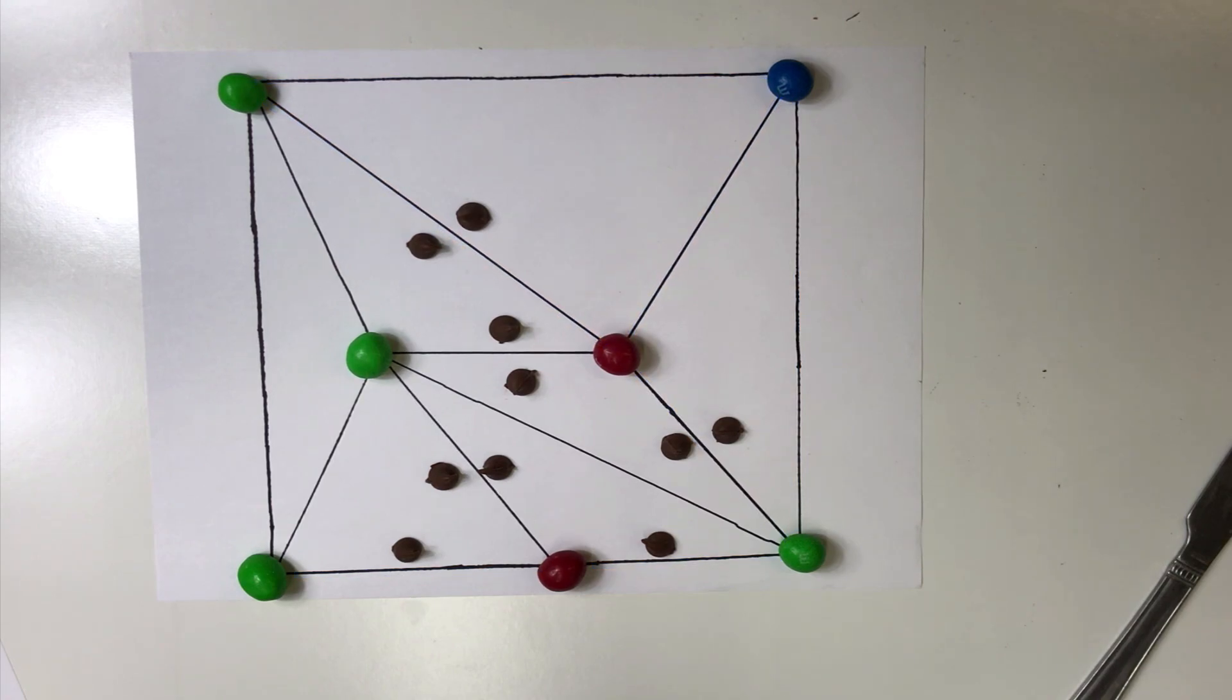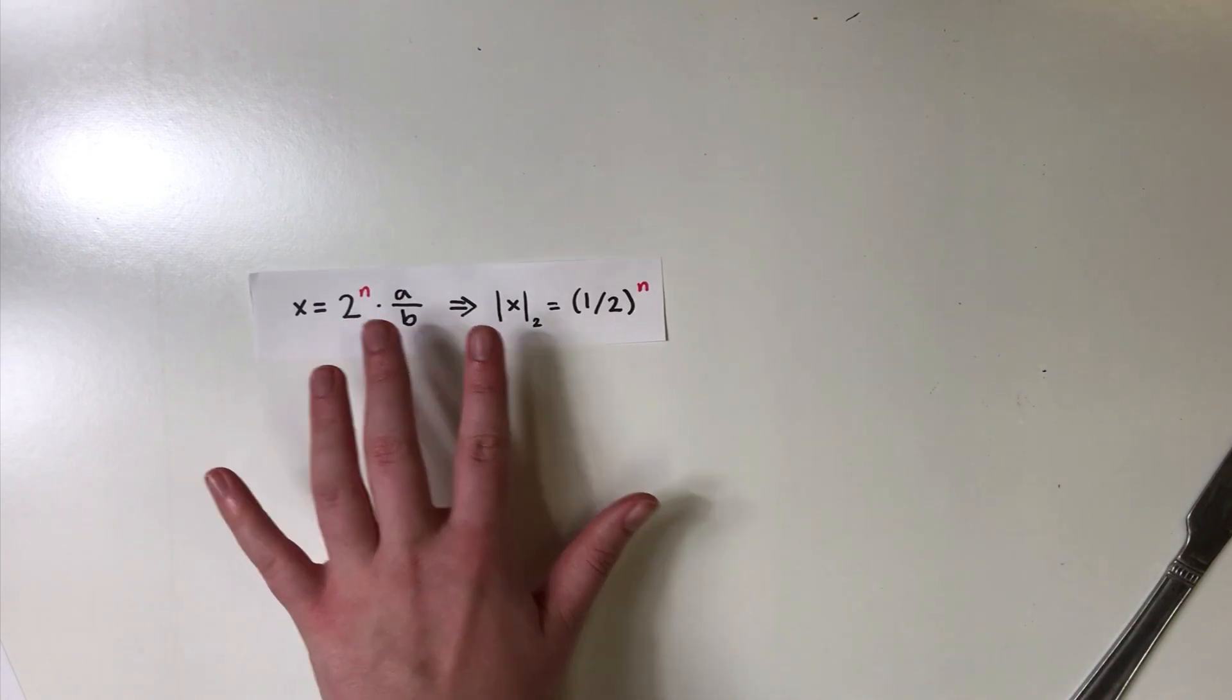Now, to describe the 2-adic valuation. A valuation is just a way of representing how big a number is, like absolute value. For 2-adic valuation, we determine how many powers of two are represented in a number. However, this formula describes how we determine the 2-adic valuation.